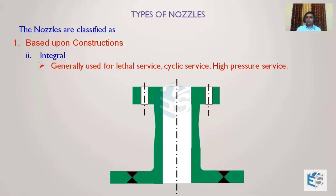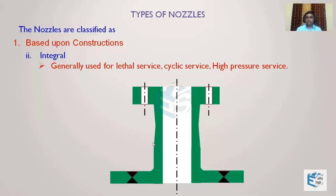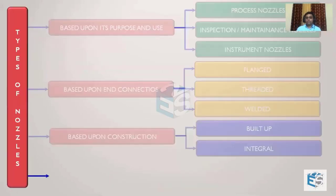The integral nozzle is a single forging made separately by forging specialists, which is why its cost and lead time are much higher than built-up construction. In built-up construction, standard flanges and pipes in standard schedules are readily available, but for integral nozzles, they are designed and fabricated specifically for your particular equipment. Unless high pressure, cyclic service, or lethal service is required, people do not go for this type of construction.